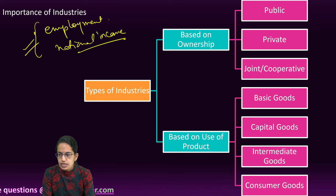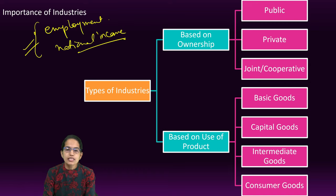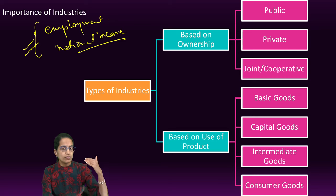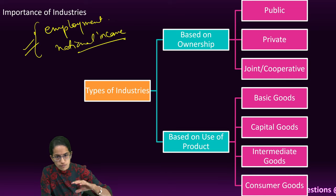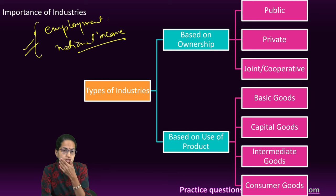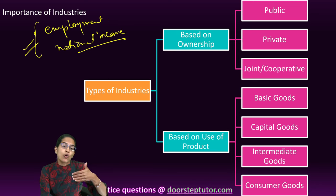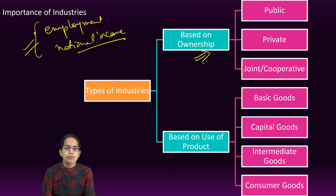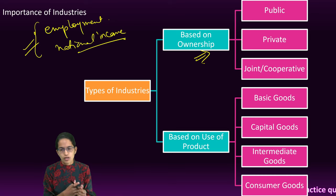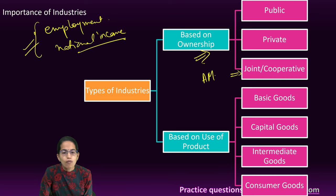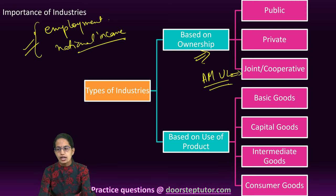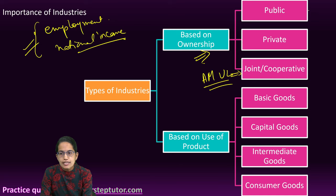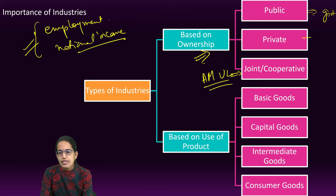We would first understand how industries can be classified. Industries can be classified on numerous bases — it can be on the basis of size, investment, ownership, the kind of products used, and so on. Today we would first understand some basic classifications and then the factors affecting the location of industry. Based on ownership, it can be either a public industry, private industry, or a cooperative industry.